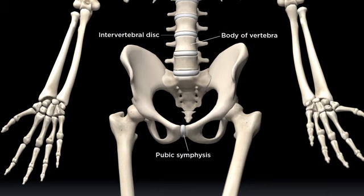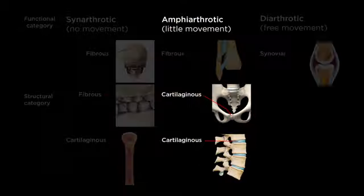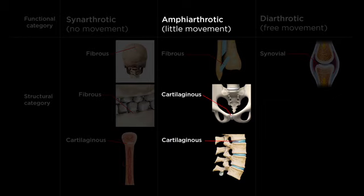With regard to the intervertebral discs of the spine or the pubic symphysis of the pelvis, the connective tissue between the faces of adjacent bones is a pad of fibrocartilage, which contains more collagen fibers and is stronger than hyaline cartilage. The intervertebral discs and the pubic symphysis still allow for a slight degree of movement, so they're functionally amphiarthrotic and structurally cartilaginous joints, since fibrocartilage is a type of cartilage. There's a little movement between any two adjacent vertebrae, which aids the flexibility of the spine, and a little movement at the pubic symphysis, such as when we walk.